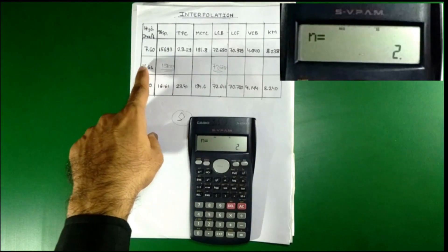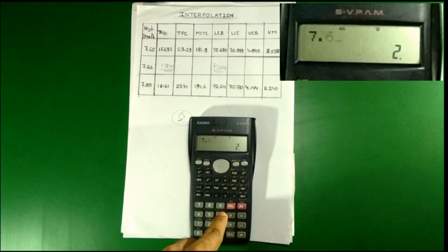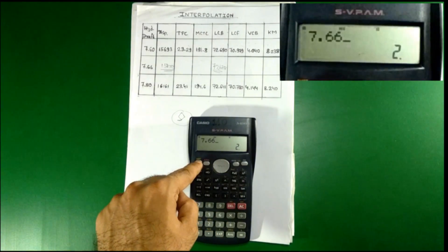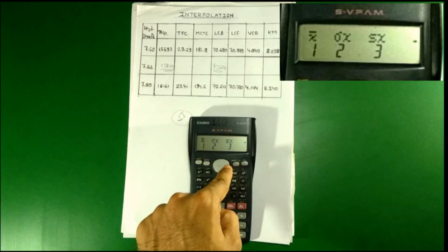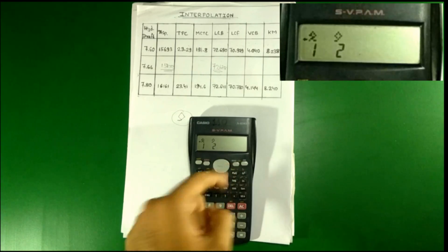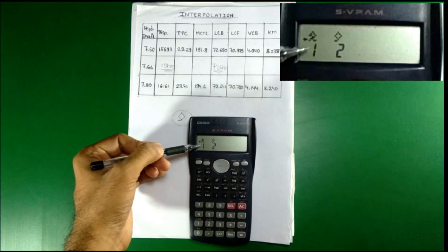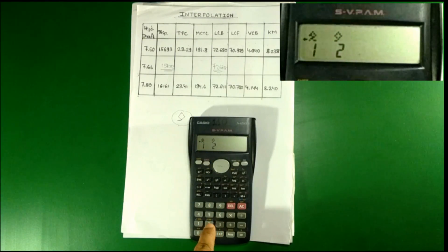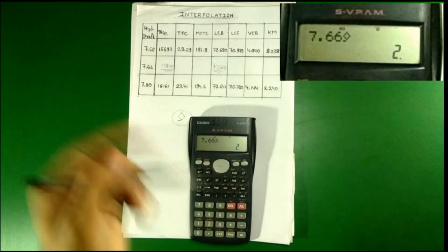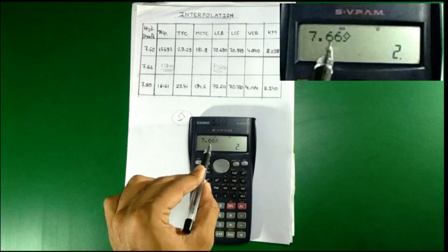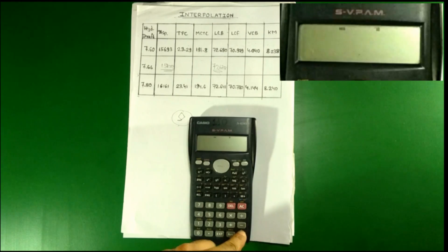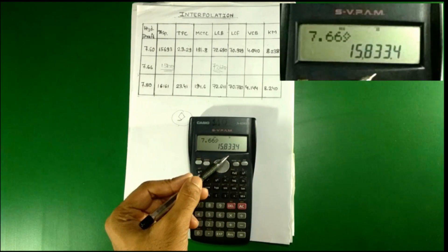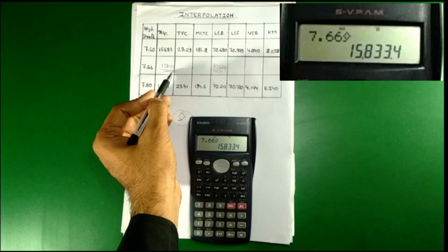Now to find the value for draft 7.66, press 7.66. Then press Shift and 2. You will see some symbols on your screen — use the navigation button to go to the end and find the interpolation symbol. Press 2 to select that symbol, and you will see it appear after 7.66. Press Equal to get the answer: 15833.4.